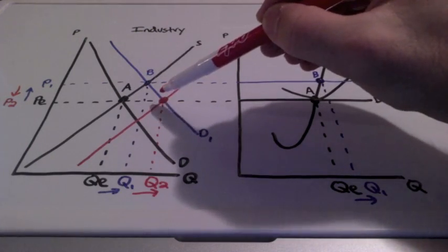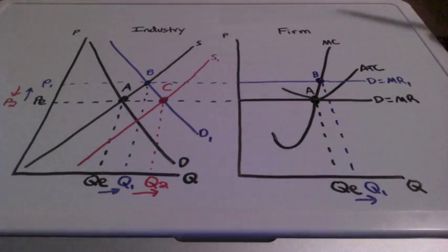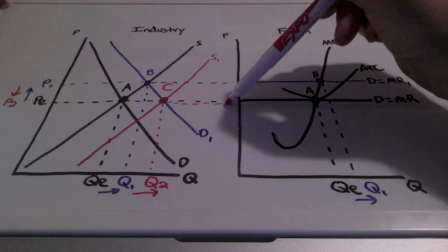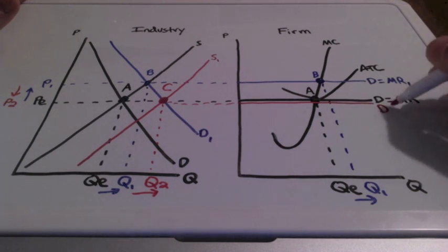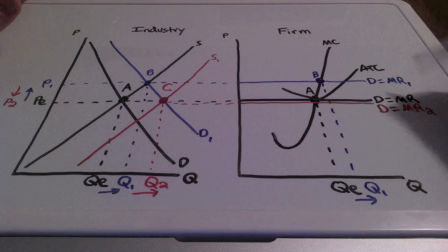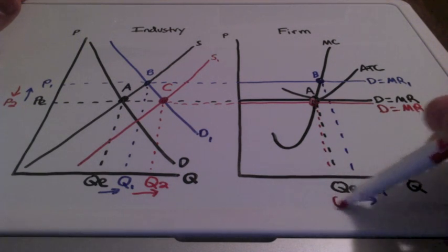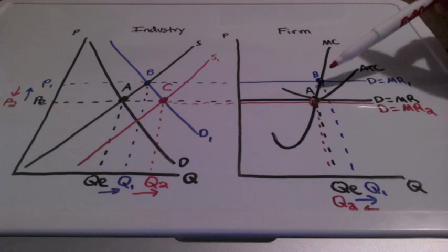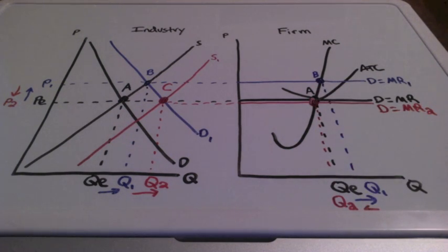We move from B to C — prices go down, but quantity continues to increase. The industry once again controls the firm's price and quantity of production. We have new demand and marginal revenue points, and as you can see, we are back at long run equilibrium. This increase in supply relays to the firm that profits were short lived — their quantity of production moves back to the left and we return to where we started.